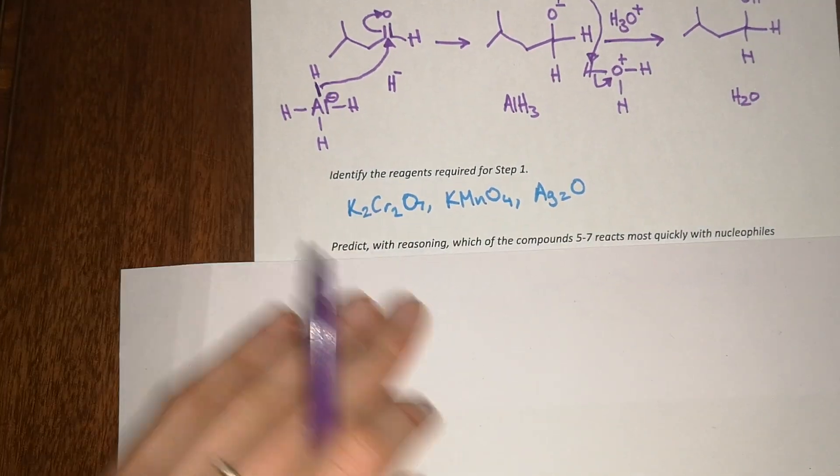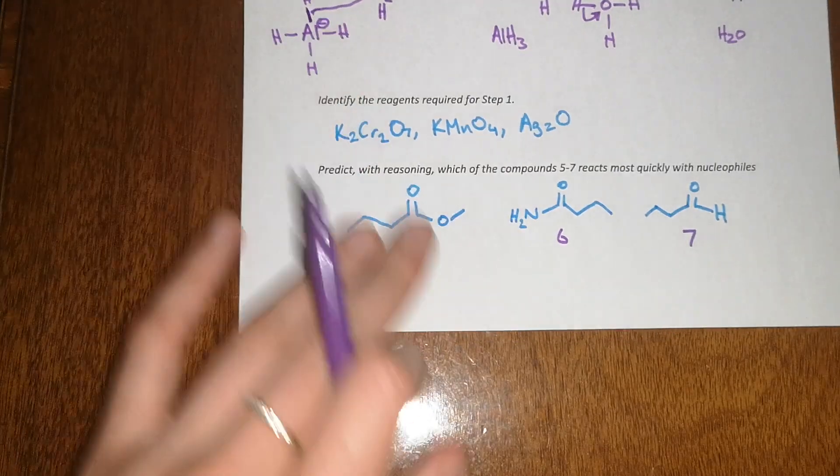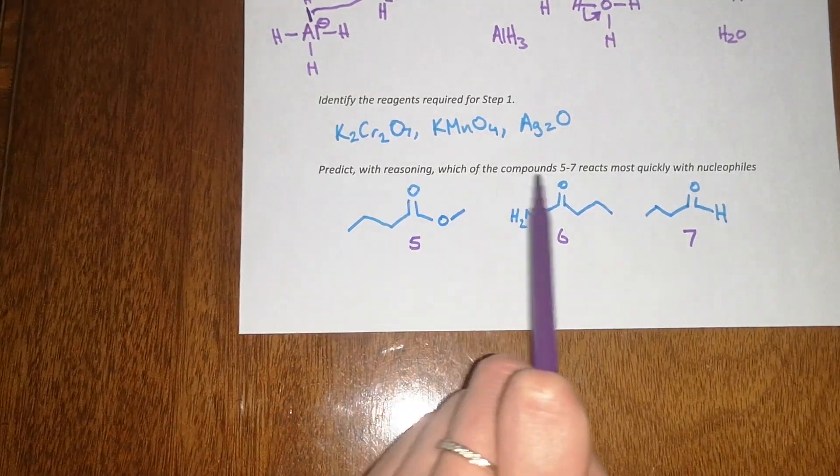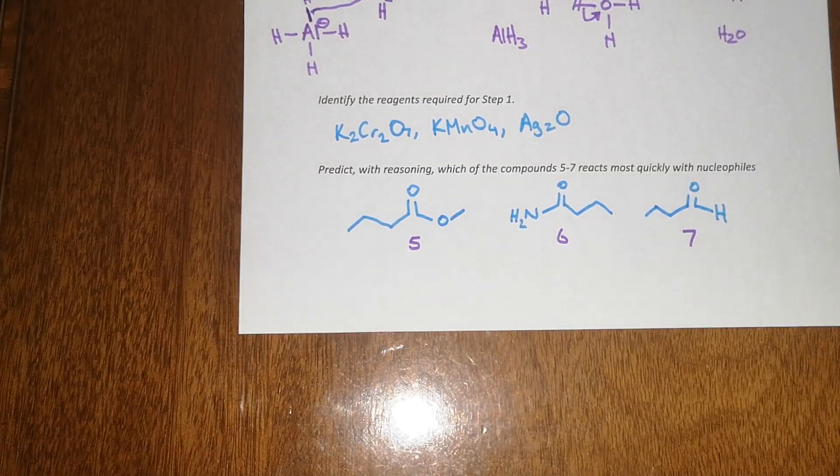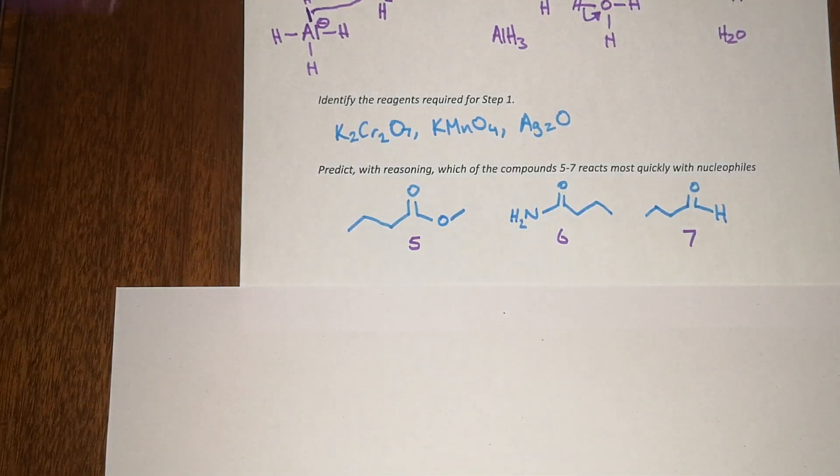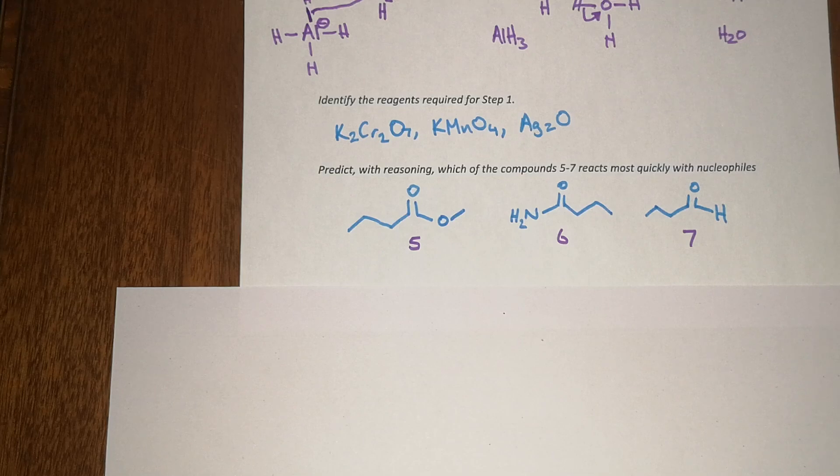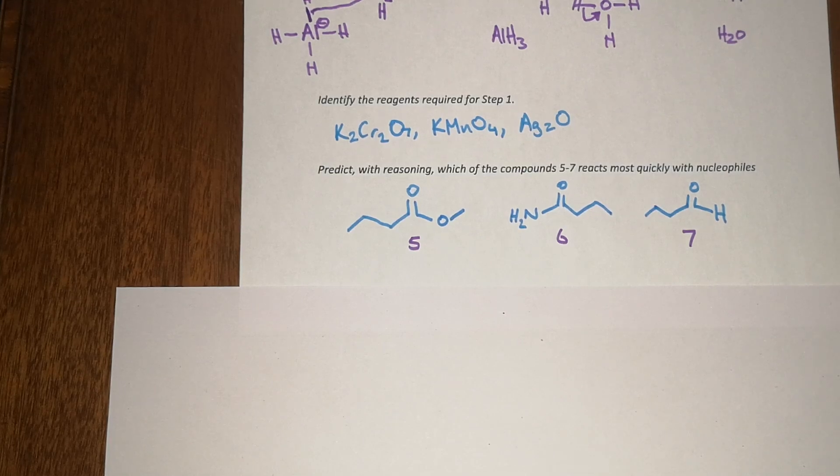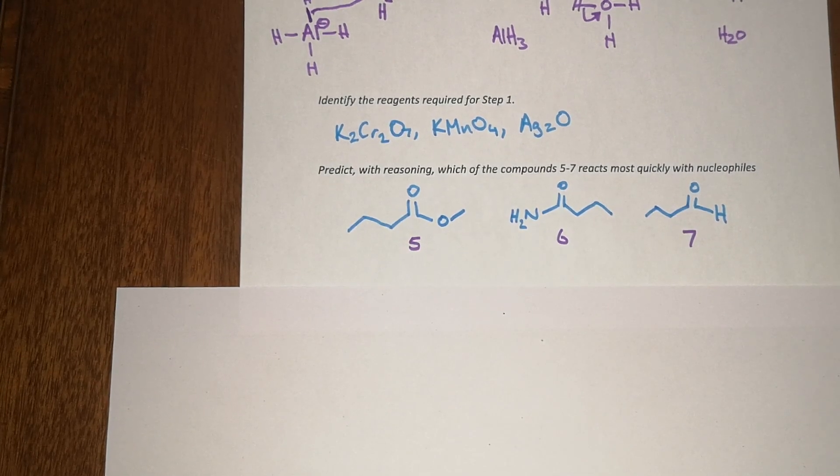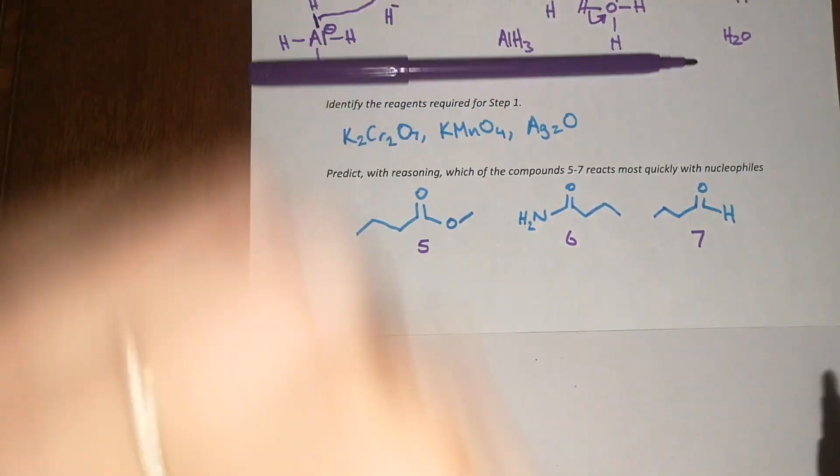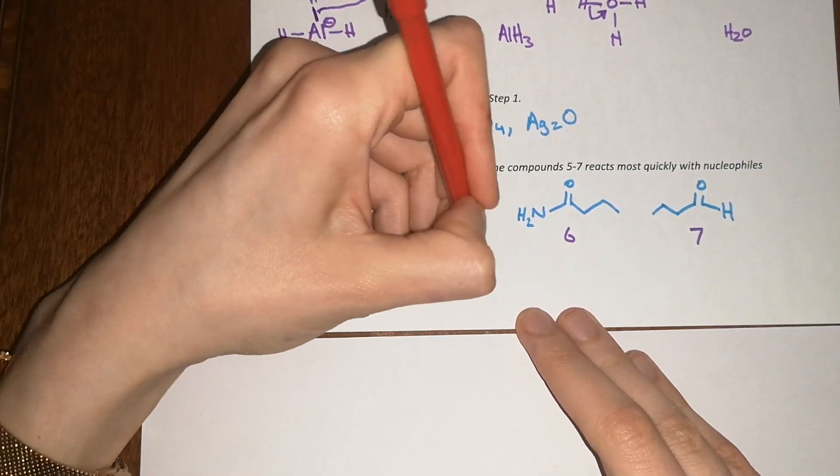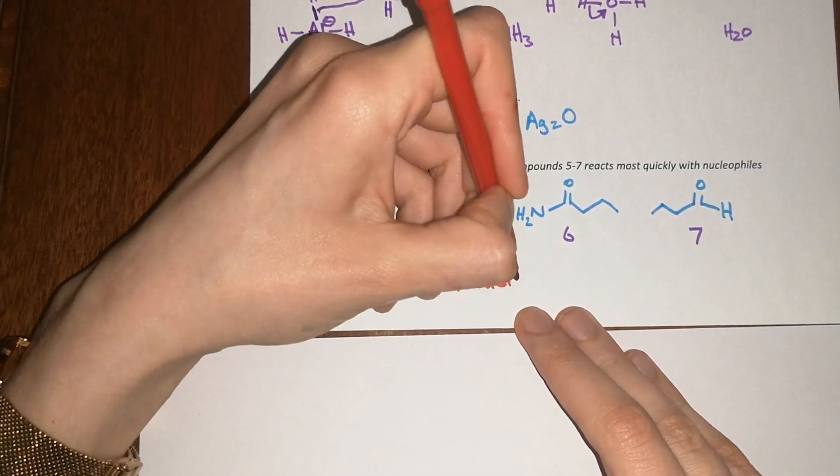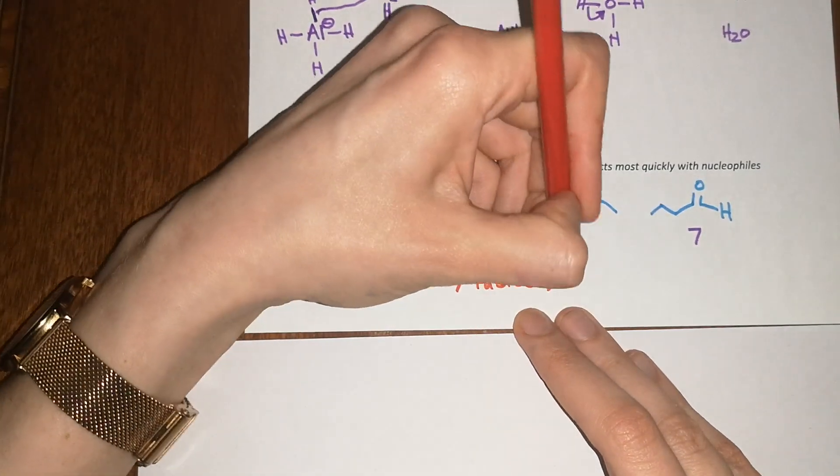This last question is slightly taking a different turn. Predict with reasoning which of the compounds five to seven react most quickly with nucleophiles. This is covered in detail in the videos on esters, amides, and carboxylic acids. In terms of the final answer, seven is fastest, then five, then six.